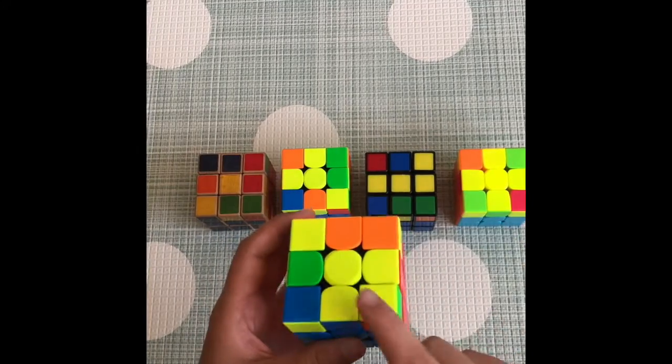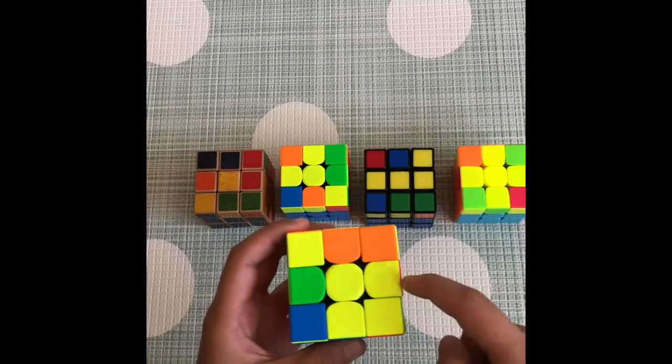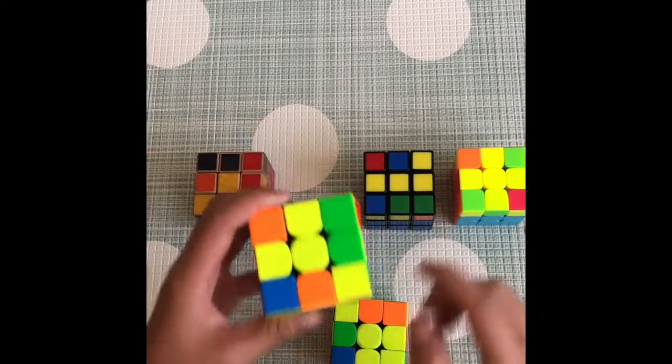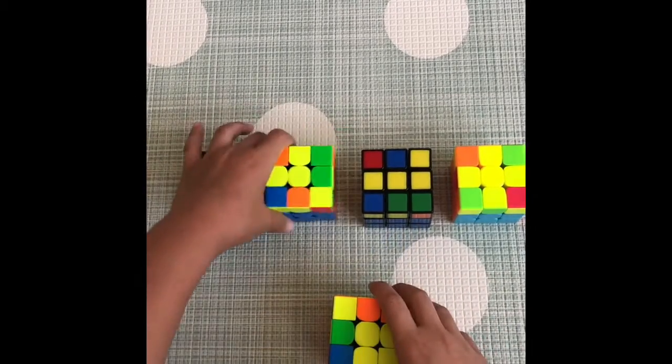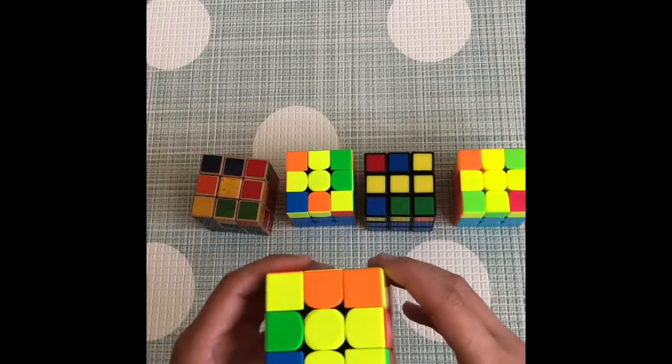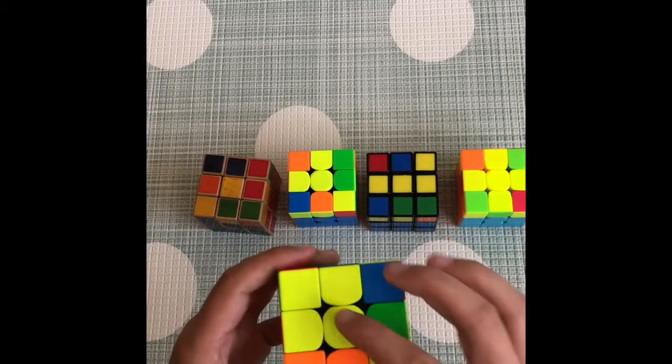That basically gives you the second step, which is a yellow L shape. So now if your L is facing up and away from you, then turn the top face until the L faces the bottom right hand corner.